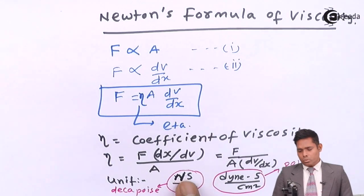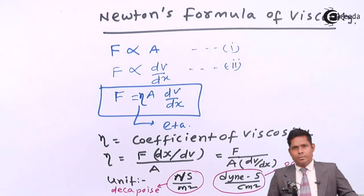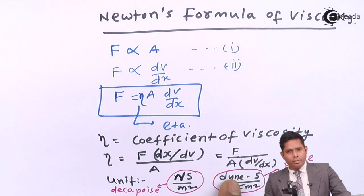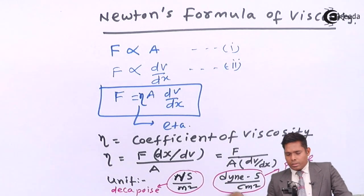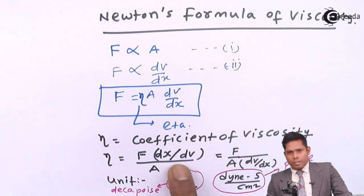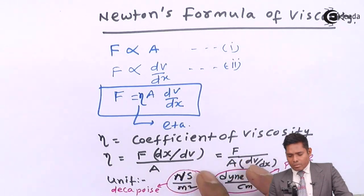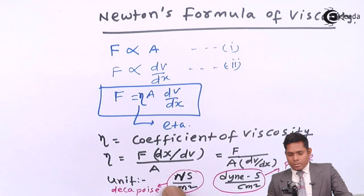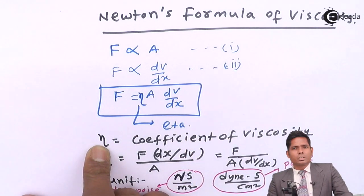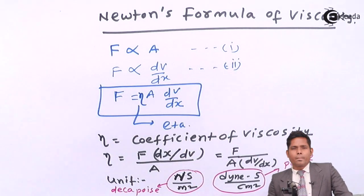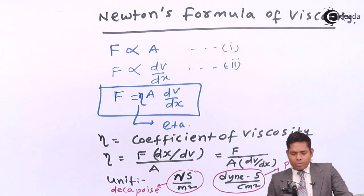one Decapoise is 10 Poise. Obviously, if you convert this into dyne, then 10 raised to 5 dyne. One Newton is 10 raised to 5 dyne. And meter square is 10 raised to 4 cm square. So here 10 raised to 5, here is 10 raised to 4, that cancels and 10 is left. So one Decapoise is 10 times Poise. So therefore, Decapoise is the SI unit of coefficient of viscosity. And Poise is the CGS unit of coefficient of viscosity.